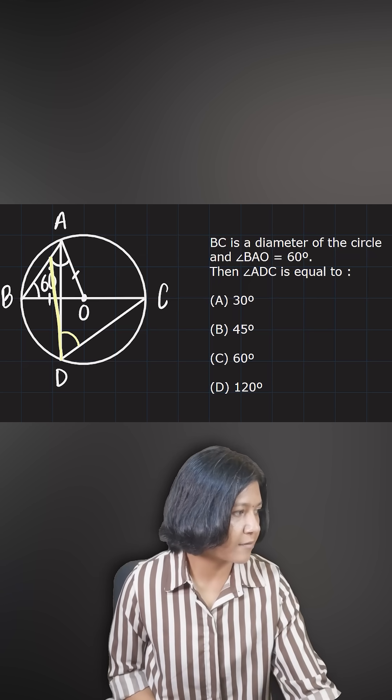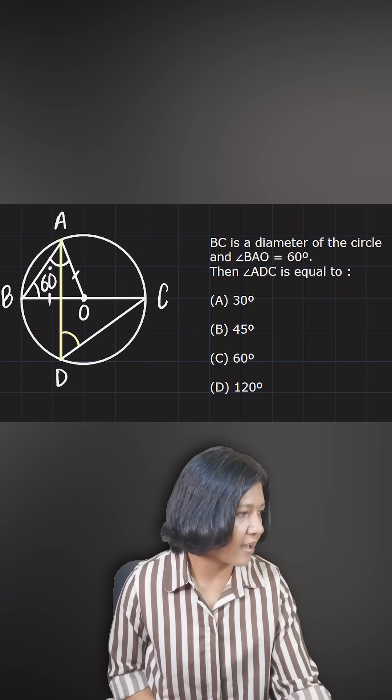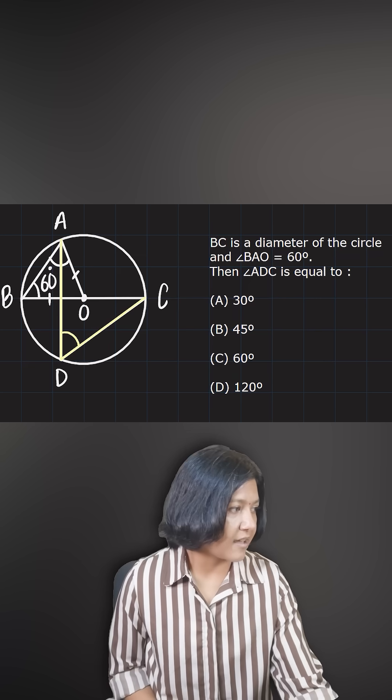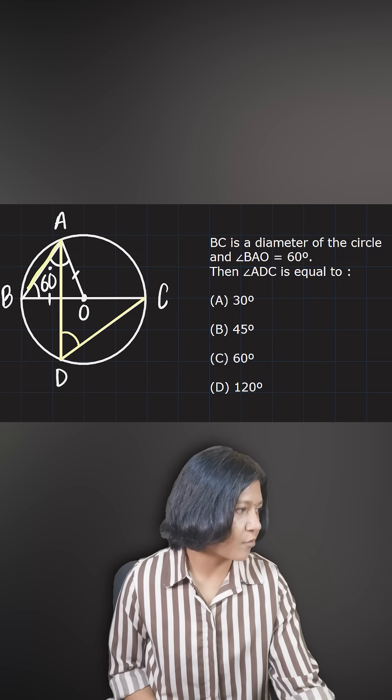It is subtended. This angle is subtended by the arc AC. You can clearly see. The same arc is now subtending the angle somewhere else.